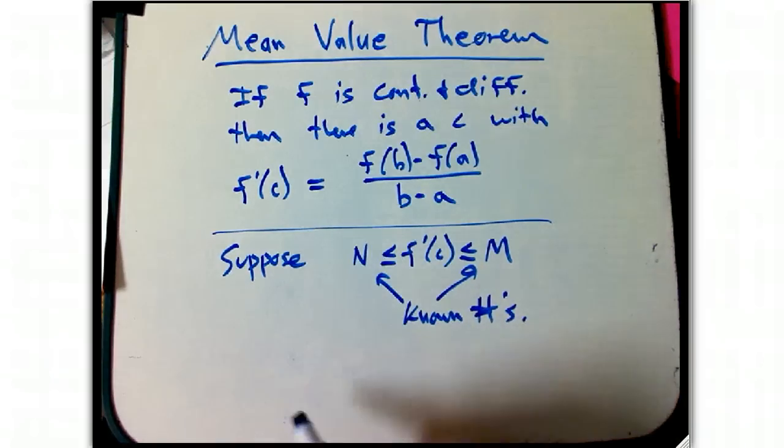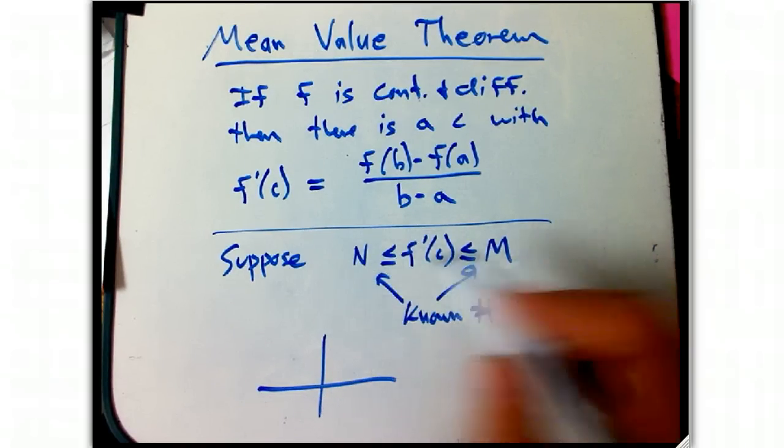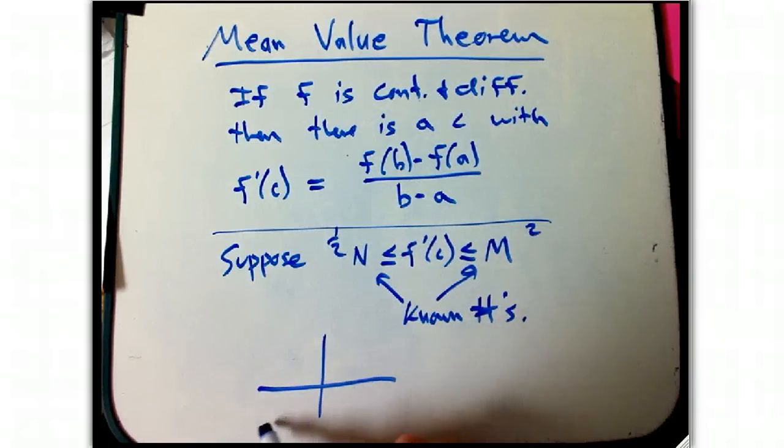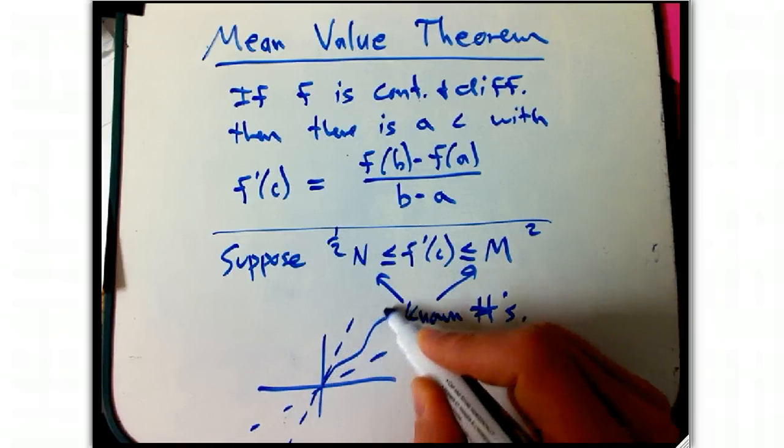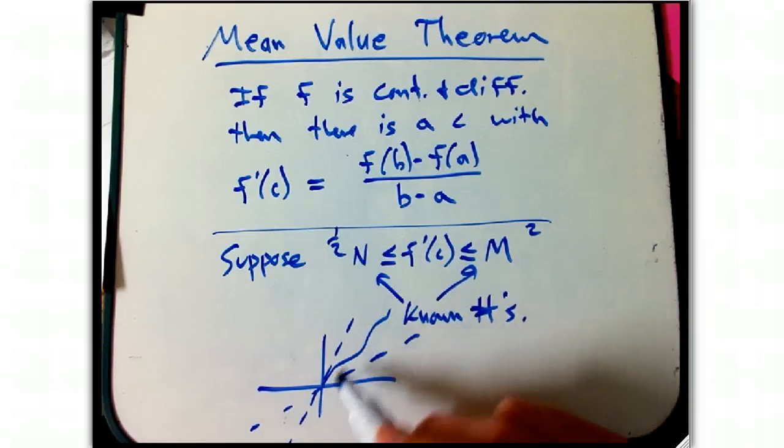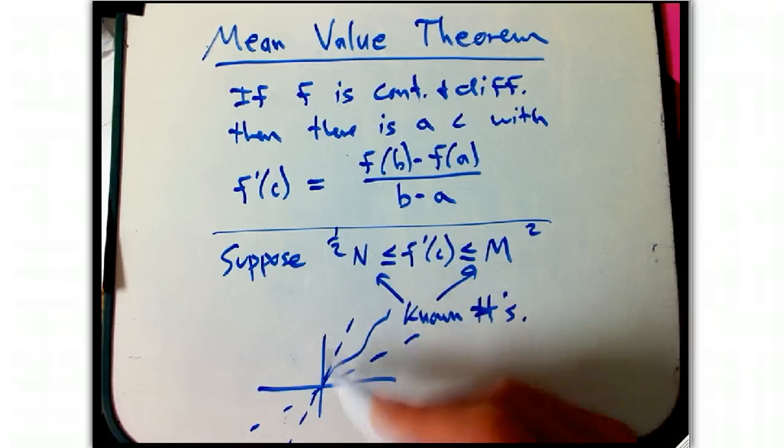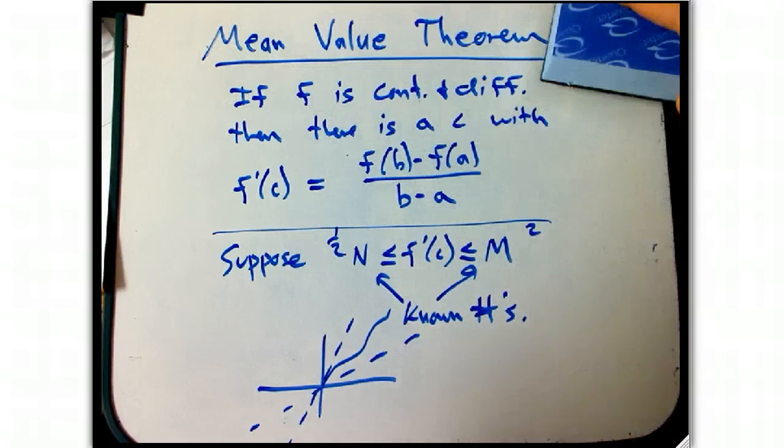Well, that should mean that the slope is at least n and less than m. Let's say this is like one-half and this is two. So, it would be somewhere between these, you can't wiggle too much. You can't turn around, you can't get flat, you can't go too steep. That has something to do with the values this function can have. So, let's see. Another way to think about it, in terms of speed.